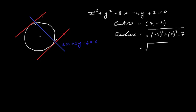So our radius is going to be √(16 + 4 − 7) = √13. The distance from the center to each point of contact on the tangents is √13. Similarly on the other side, the distance from the center to each tangent is √13.